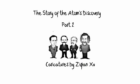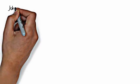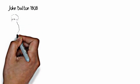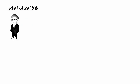In part one we talked about the early history of the atom starting with Democritus in 400 BC going all the way up to John Dalton in 1808.